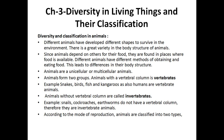Animals are unicellular or multicellular, and they form two groups. Animals with a vertebral column are known as vertebrates. Examples include snakes, birds, fish, kangaroos, and humans — they all have a vertebral column, which is why they are called vertebrates. Animals which do not have a vertebral column are called non-vertebrates, also known as invertebrates.